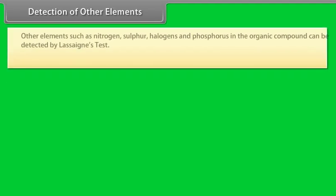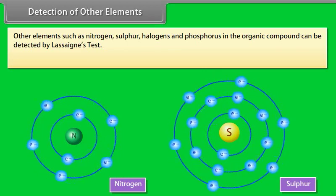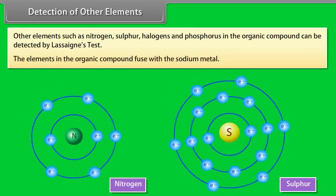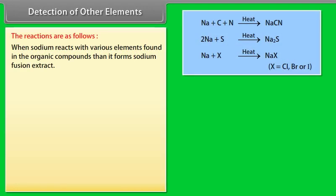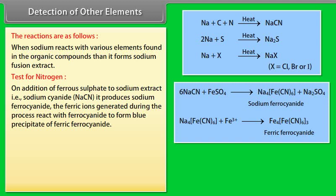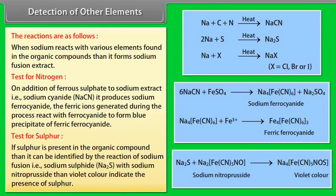Detection of other elements: Other elements such as nitrogen, sulphur, halogens, and phosphorus in the organic compound can be detected by Lassaigne's test. The elements in the organic compound are fused with sodium metal to form a sodium fusion extract. Test for nitrogen: on addition of ferrous sulphate to the sodium extract (sodium cyanide), it produces sodium ferrocyanide. The ferric ions generated react with ferrocyanide to form a blue precipitate of ferric ferrocyanide. Test for sulphur: the reaction of sodium fusion extract (sodium sulphide, Na₂S) with sodium nitroprusside — a violet colour indicates the presence of sulphur.